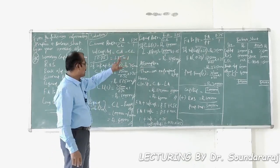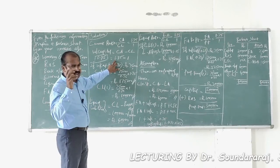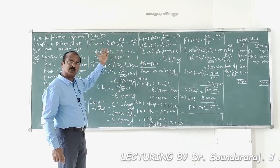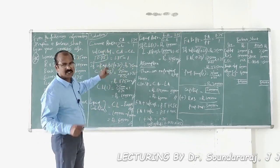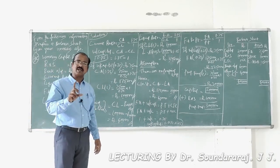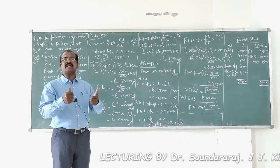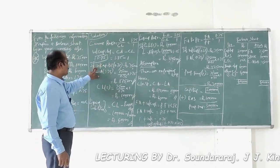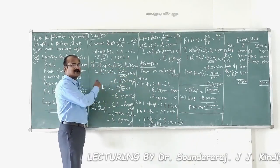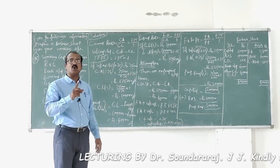Working capital = Current Assets − Current Liabilities. From the current ratio, current assets carry a weight of 1.75 and current liabilities carry a weight of 1. Therefore, the weight for working capital = 1.75 − 1 = 0.75. If working capital with weight 0.75 = ₹75,000, then current assets with weight 1.75 = 75,000 ÷ 0.75 × 1.75 = ₹1,75,000.